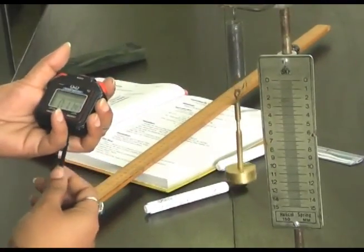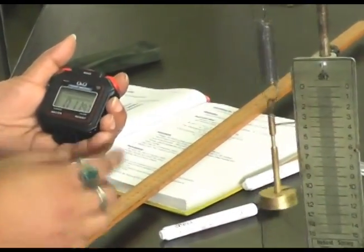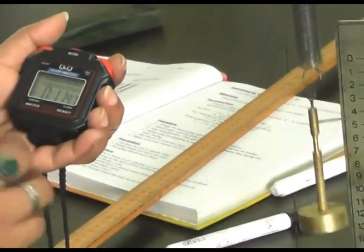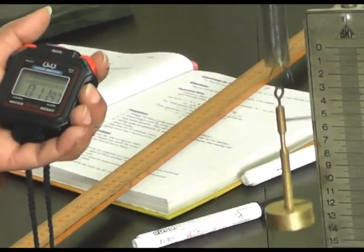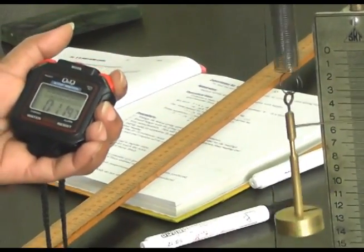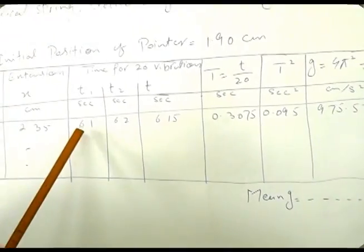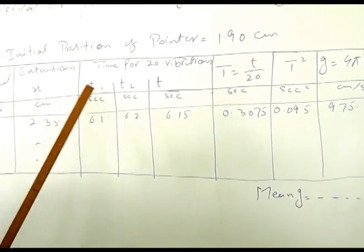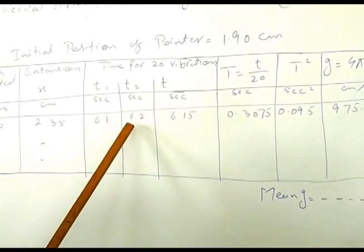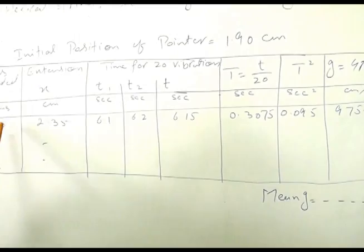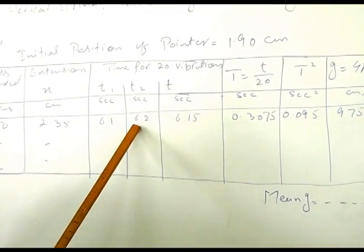When the oscillations start to move smoothly, we will start the stopwatch from zero value and note down the value for 20 vibrations. After 20 vibrations, we will stop the stopwatch and note down the value. What we observe from the performance is that time for 20 vibrations is 6.1 seconds. We repeated the same with the same weights and second time we observed 6.2 seconds.